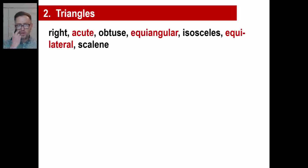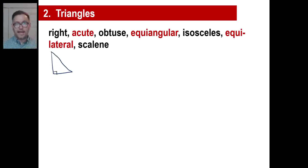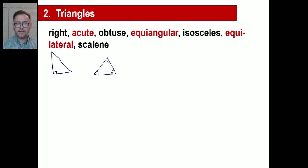Let's talk about triangles. A right triangle has a right angle in it, which is 90 degrees. An acute triangle is one where all three angles are all less than 90 degrees.